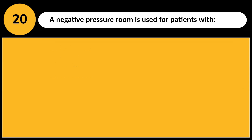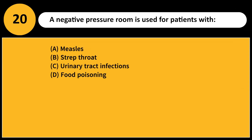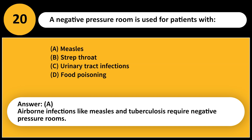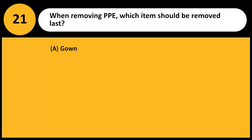A negative pressure room is used for patients with: A. Measles. B. Strep throat. C. Urinary tract infections. D. Food poisoning. Answer: A. Airborne infections like measles and tuberculosis require negative pressure rooms.